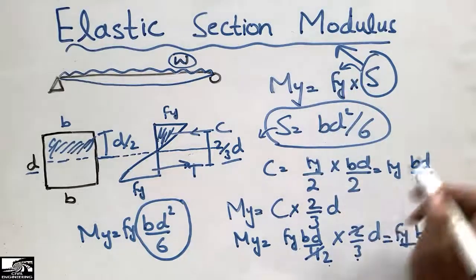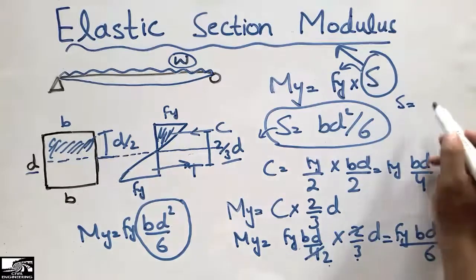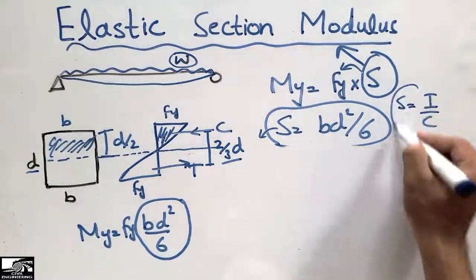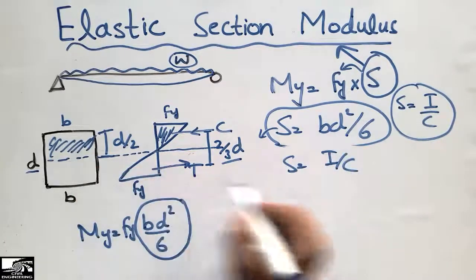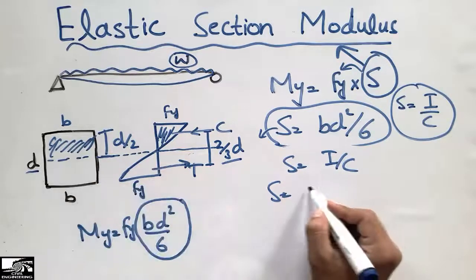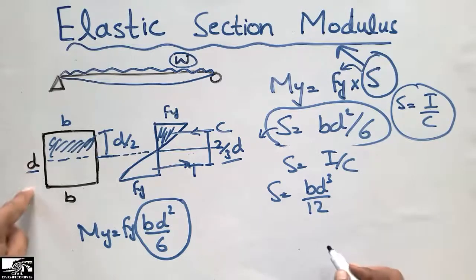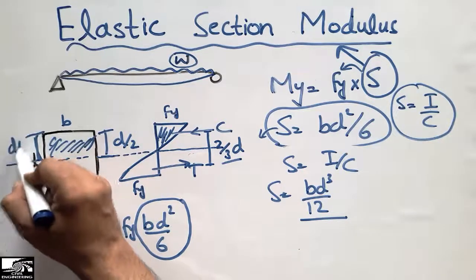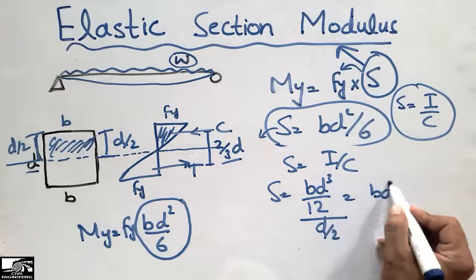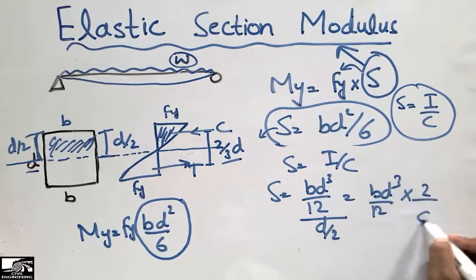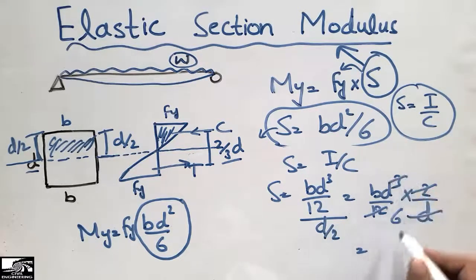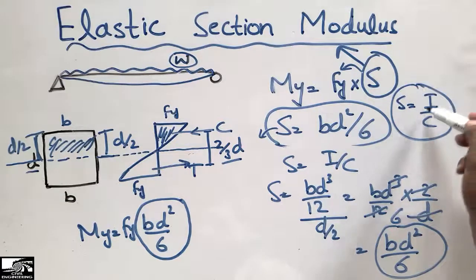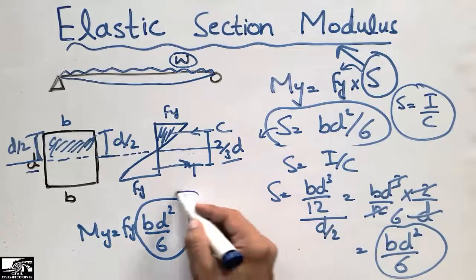The elastic section modulus can also be calculated using the formula S = I/c. I can also prove this using this method. The moment of inertia of this rectangular section is I = B·D³/12. The distance c is the extreme fiber distance from the neutral axis, which is D/2 in this case. Substituting: S = (B·D³/12) / (D/2) = B·D³/12 × 2/D = B·D²/6. This confirms the elastic section modulus of the rectangular section is B·D²/6.